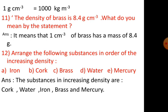Number 12. Arrange the following substances in order of the increasing density: Iron, cork, brass, water, mercury. The substances in increasing density are cork, water, iron, brass and mercury.